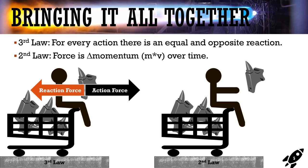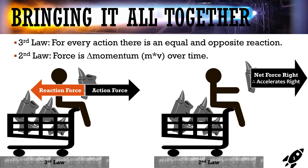Looking at the anvil, there's a weight force pulling it down but we'll neglect that since we're focused on the horizontal direction. In the horizontal direction, the action force I applied pushes the anvil to the right. The only resistive force would be air drag, which is so small we can ignore it. To understand the acceleration of the anvil to the right, we use the second law, F equals MA, and with this net force and the mass of the object, it's going to accelerate to the right — which is intuitive since I threw it that way.